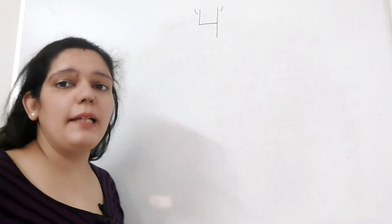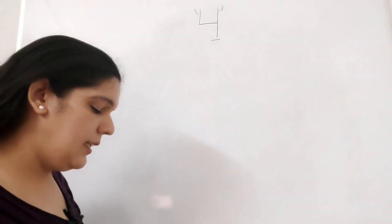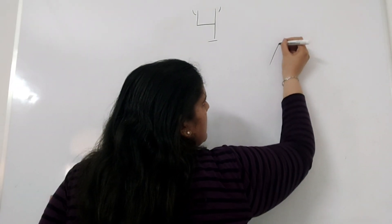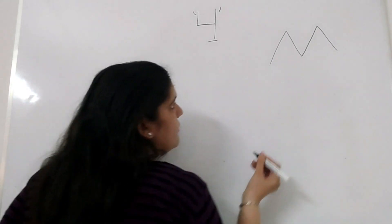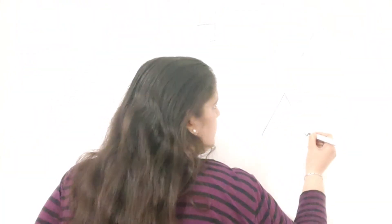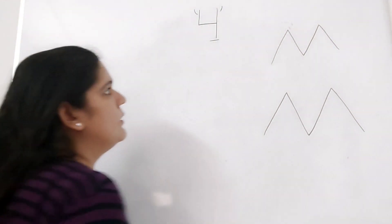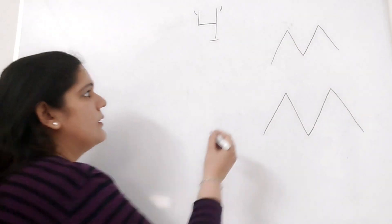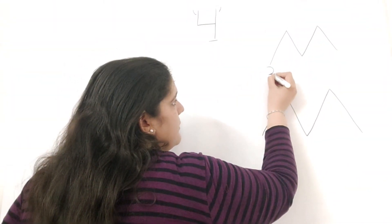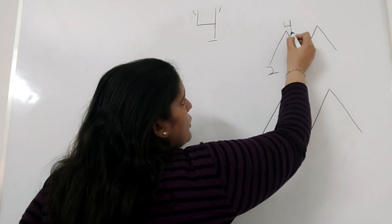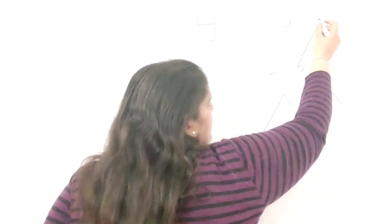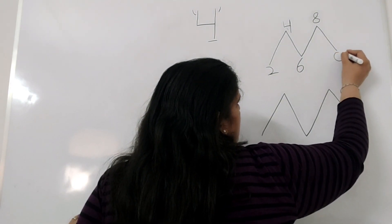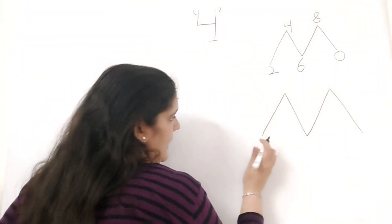We will start with the 4 times table. For this we will draw 2 M shapes. Now what we will do is we will write the 2 times table till 2 times 4: 2 times 1 is equal to 2, 2 times 2 is equal to 4, 2 times 3 is equal to 6, 2 times 4 is equal to 8. And at the end we will place a 0. The same thing we will do with the next M, that is the second M.